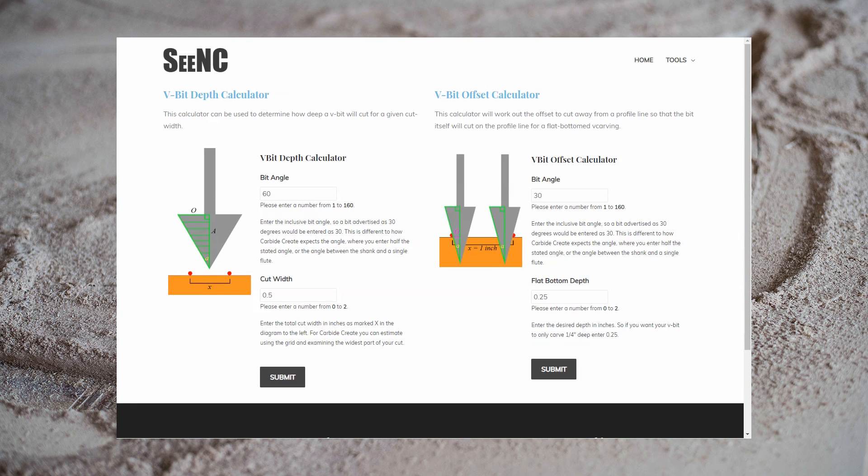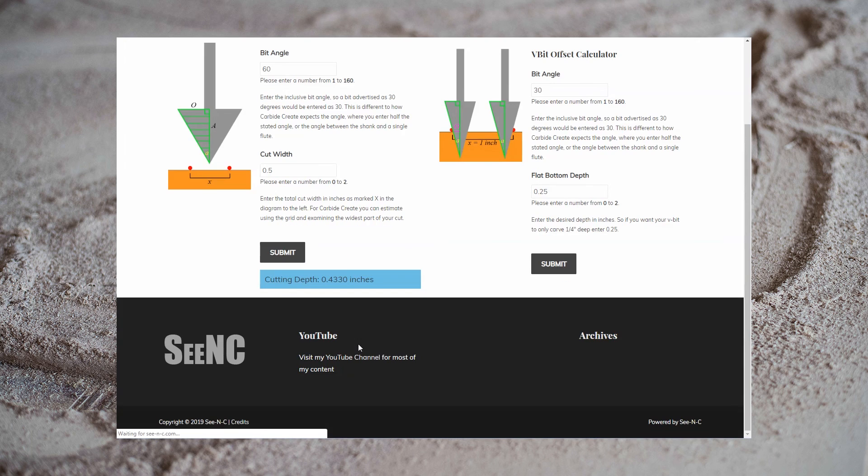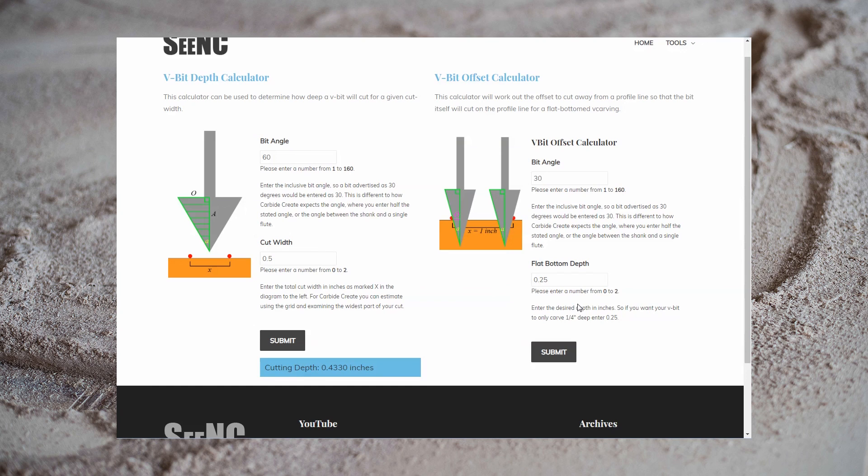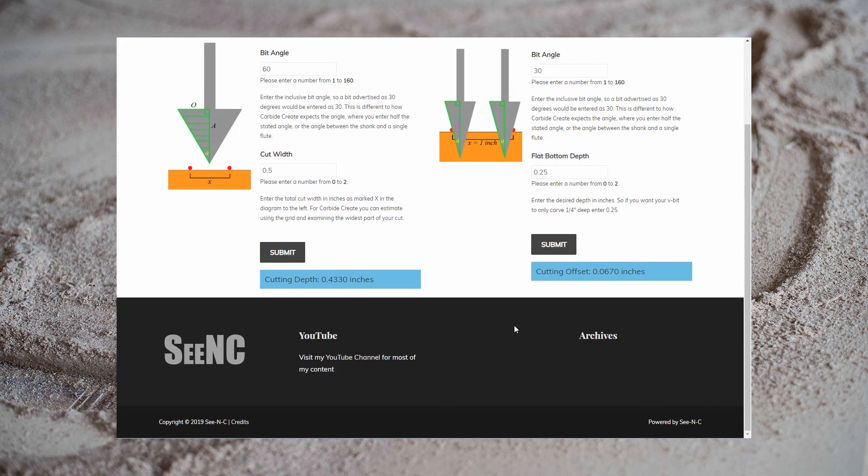The calculator on the left, if given a bit angle and the cut width, will tell you the depth of the cut. It will tell you how deep your V-carve will go. If that's more than your stock, then you know you have to adjust something. Likewise, if you want to do a V-carve operation with a flat bottom in Carbide Create, telling the second calculator the angle of your bit and how deep you want it to go, will tell you the offset from your geometry you need your cutter to cut at, so that the edge of your V-bit will be on your line.